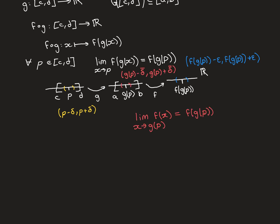This proof is actually simple — we just use continuity of f and g. Because f is continuous on its domain and g(p) is a point inside that domain, f is continuous at g(p). So the limit as x → g(p) of f(x) equals f(g(p)). This means for any epsilon interval around f(g(p)), there exists a delta-bar interval around g(p) — shown in red, from g(p) − δ̄ to g(p) + δ̄ — such that all points inside it are mapped into the epsilon interval.